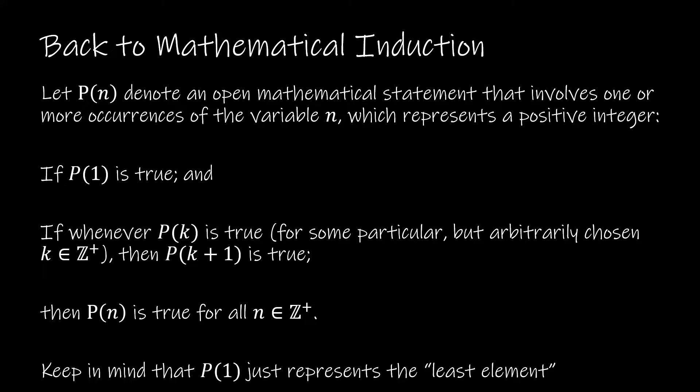We're going to let P of N denote some mathematical statement involving one or more occurrences of the variable N, which represents a positive integer — that's Z plus. Then we're going to prove P of 1 is true, where P of 1 represents the least element, which might be 1, 2, or even 45. Then, if whenever P of K is true for some particular but arbitrarily chosen positive integer value, P of K plus 1 is also true, then we know it's true for all values.